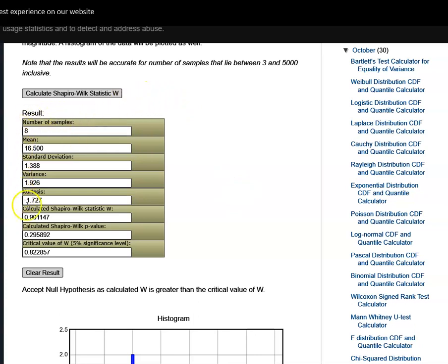So here we've got the results. And the important part here is the Shapiro-Wilk test statistic. And here we've got a p-value of 0.295 something. So we can just simply round it to 0.3. So that is our p-value.